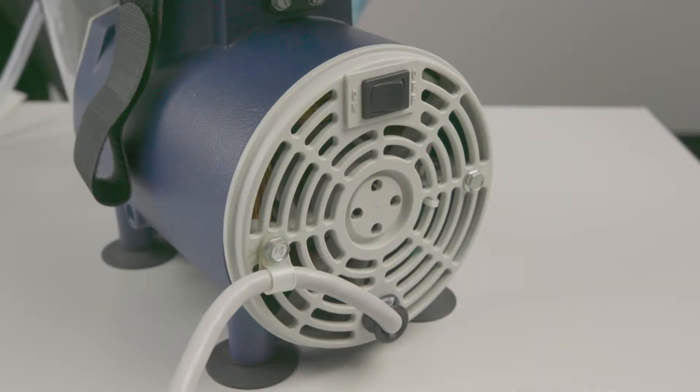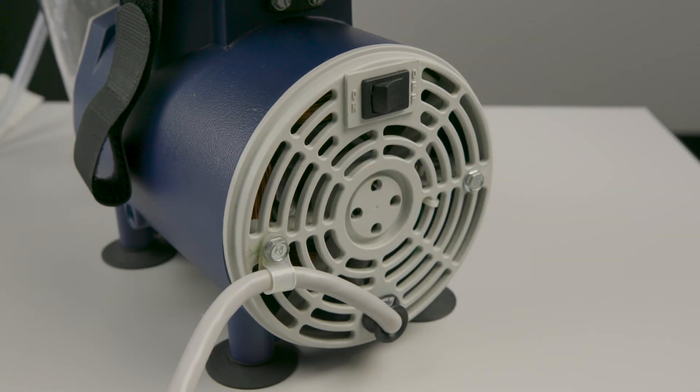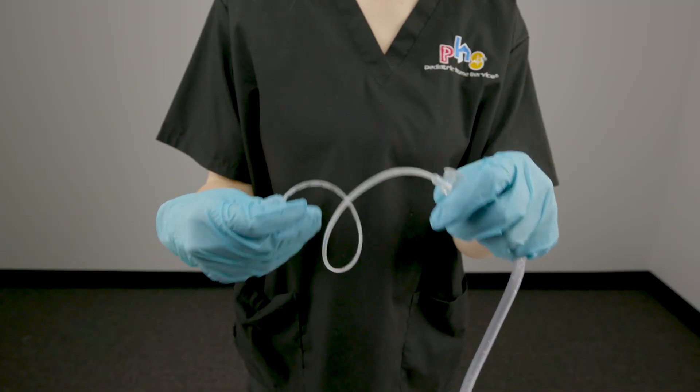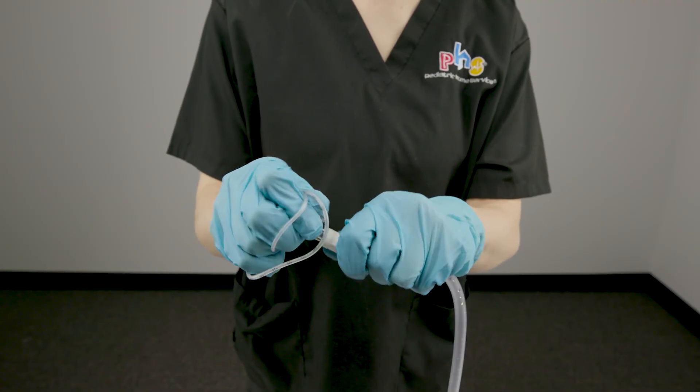When you finish suctioning your patient and rinsing the tubing, turn the suction machine off. Wrap the catheter around one of your gloved hands and disconnect the catheter from the suction tubing.